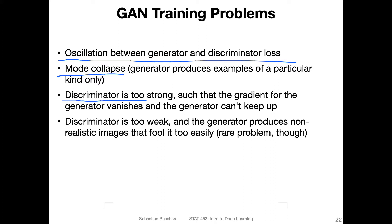One common problem with conventional GAN training — the min-max setup — is that the discriminator is too strong, because classification is simpler than generating data. If the discriminator starts out very strong and we use the loss gradient from the original formulation, what happens is that the gradient for the generator will vanish — it will be too small — and the generator can't keep up with the discriminator.